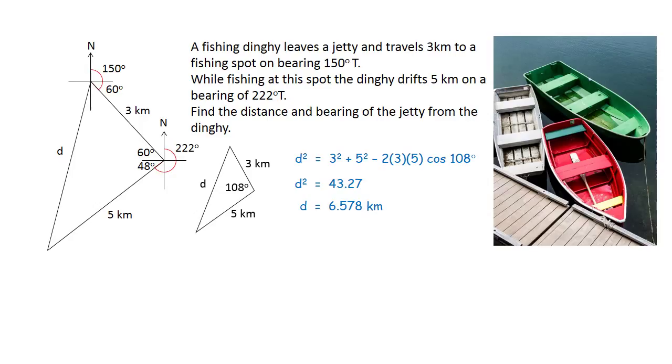Now we are also asked to work out the bearing of the jetty from the dinghy. So we place in a fresh compass rose at the dinghy and it's that little red angle in there that's going to give us the bearing required. Once again it's an angle which is not inside the triangle that we're working with, so we're going to work out this angle here, call it A, first and then we'll use it to work out the bearing.